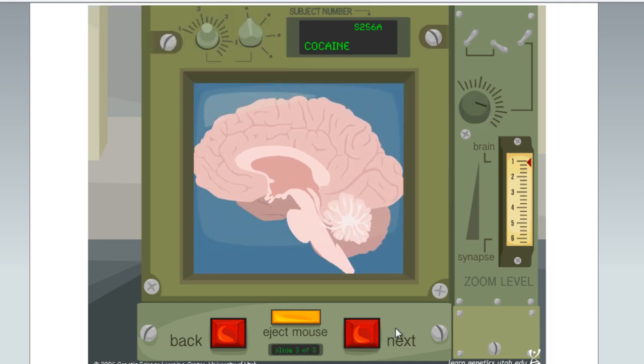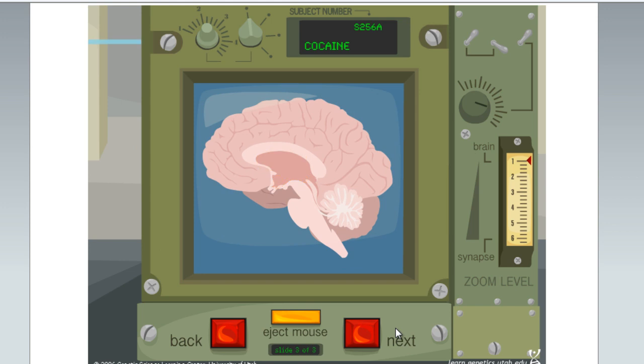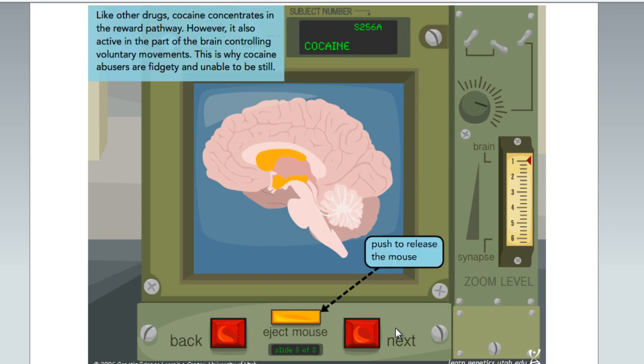Like other drugs, cocaine concentrates in the reward pathway. However, it is also active in the part of the brain controlling voluntary movements. This is why cocaine abusers are fidgety and unable to be still.